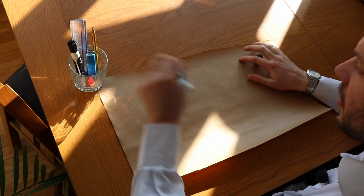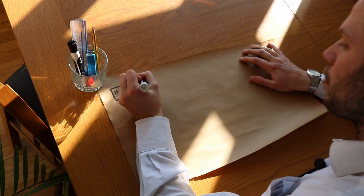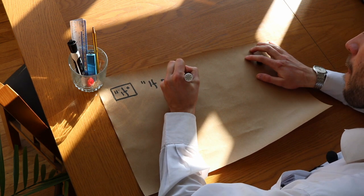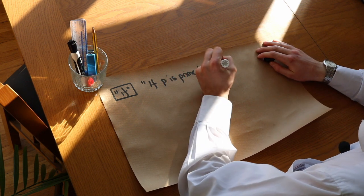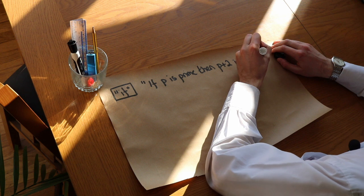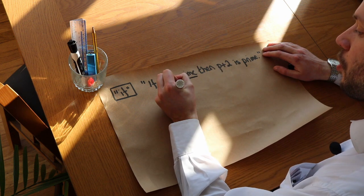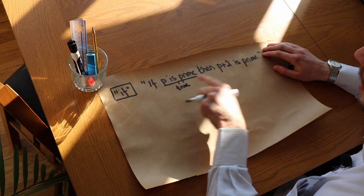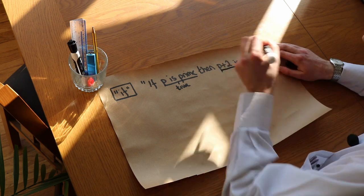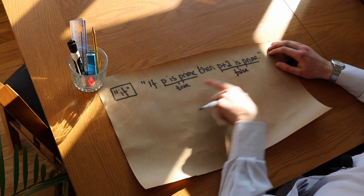The last piece of theory concerns conditional statements — any statement that has the word 'if' in it. For example: if p is prime, then p plus 2 is prime. For a counterexample to a conditional statement, the condition (the 'if' part) must be true for the statement to be relevant at all. If the condition isn't true, the statement doesn't apply. And the conclusion (the 'then' part) must be false. So we need the condition to be true and the conclusion to be false.